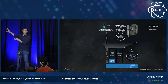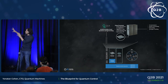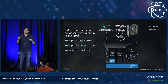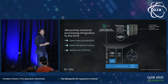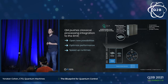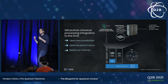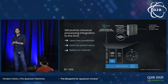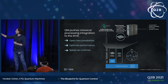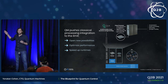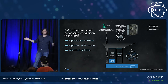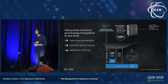Today I want to focus on the integration of classical processing into quantum, because at Quantum Machines we're pushing this to the limit. We think that the integration of classical processing is a key factor for optimizing performance, opening new possibilities in quantum control, and accelerating runtimes, as we will see in some examples.